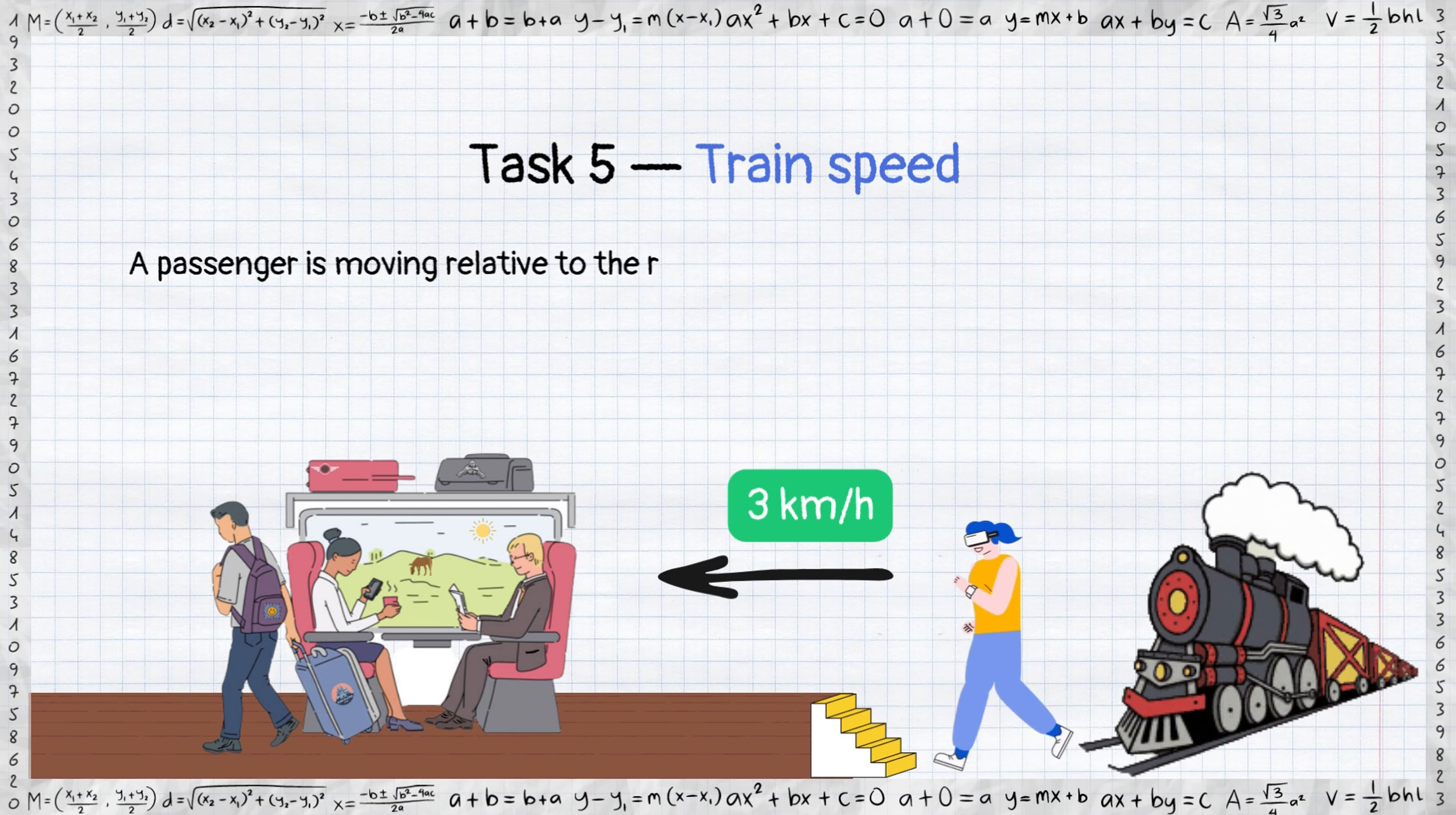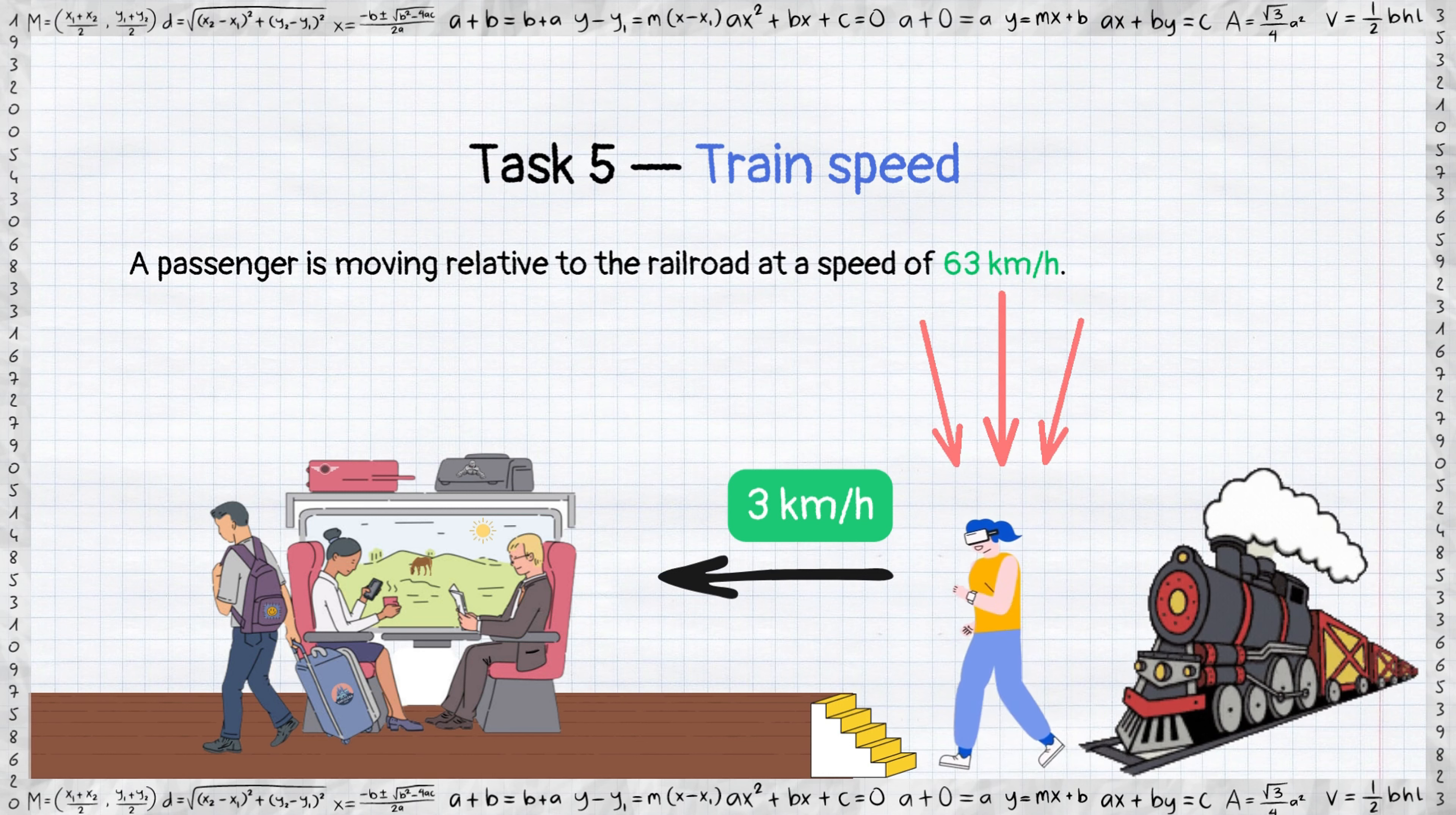A passenger is moving relative to the railroad at a speed of 63 km per hour. Why? A person who is on a train in a stationary state is moving relative to the railroad at a speed of the train. When a person begins to move, we add his walking speed to the speed of the train where he is on, and it becomes 63 km per hour.